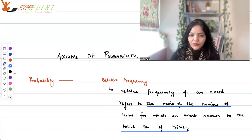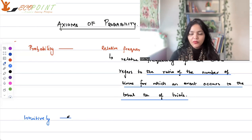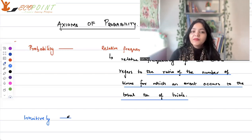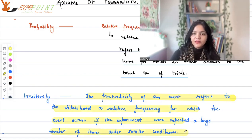Events and sample space are something we have understood before. So in one sense probability is nothing but relative frequency. Informally speaking, it is basically when you take up an experiment and perform it again and again infinitely many times under the same circumstances — the relative frequency of an event occurring becomes the probability of that event. So please note: the probability of an event refers to the likelihood or relative frequency for which the event occurs if the experiment were repeated a large number of times under similar conditions.